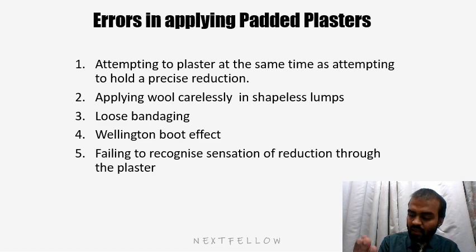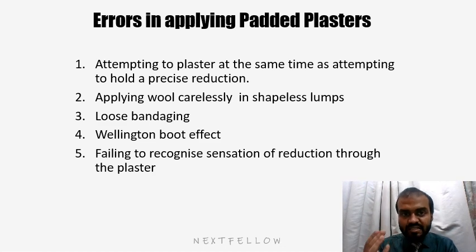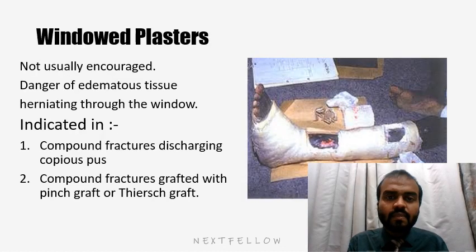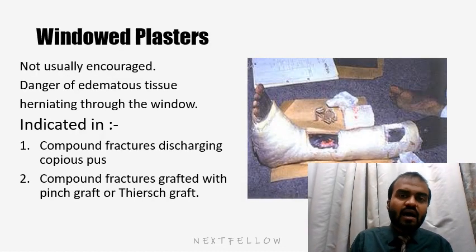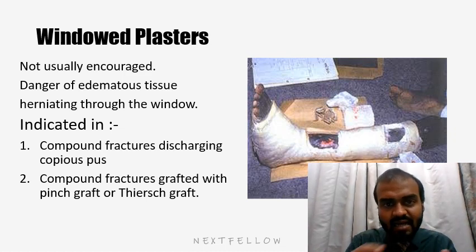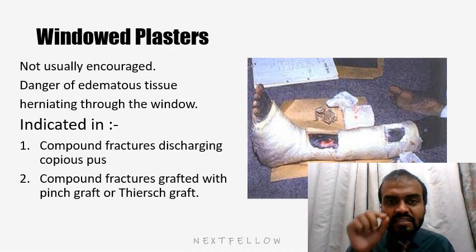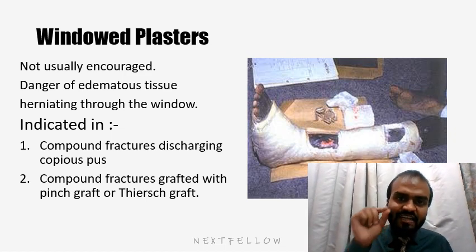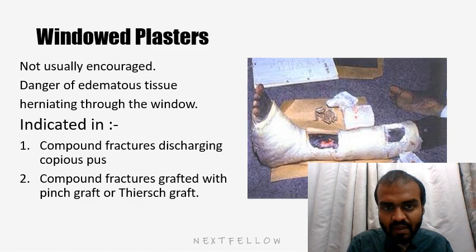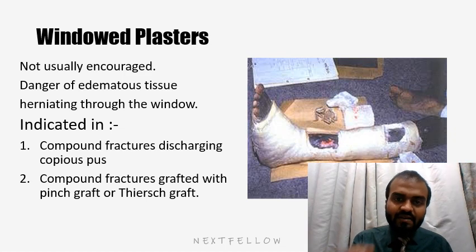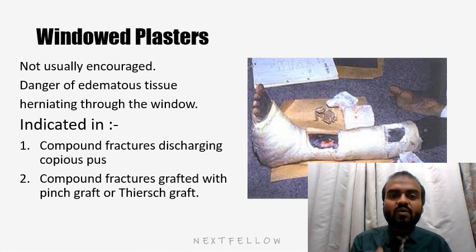If there is not a significant or adequate amount of padding, there is always a chance of injury or compartment syndrome due to the cast. Windowed plasters are not usually encouraged. A windowed plaster is when, after applying a cast, a small window is made. This window is used to aid dressing of any open wound in cases of compound fractures, and also in cases of compound fractures where a skin graft has been used.